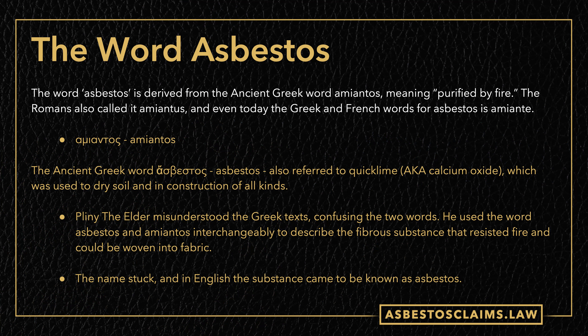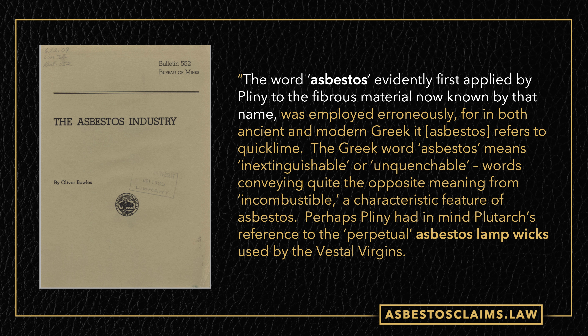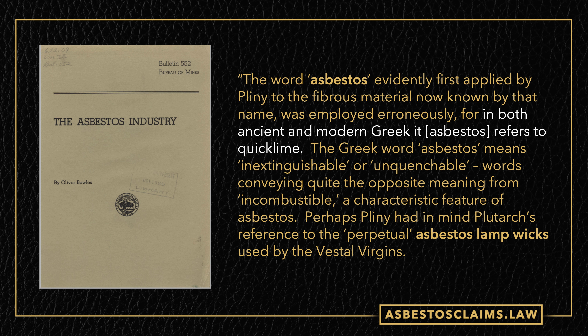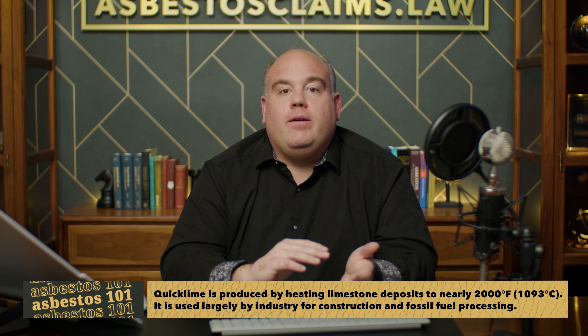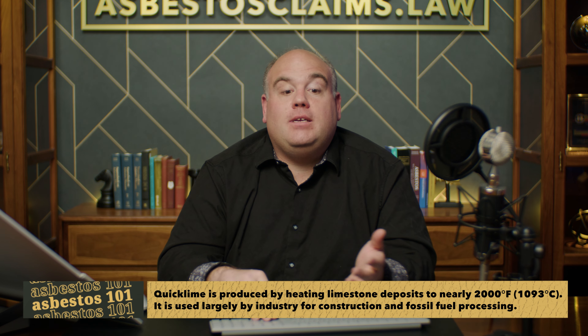The word asbestos is derived from an ancient Greek word called amiantos, which means purified by fire. The Romans had a similar name, and the Greek and French words for it today are also very similar. Oliver Bowles confirms that the word asbestos was evidently first applied by Pliny to the fibrous material, but he got it wrong. The Greek word asbestos actually means inextinguishable or unquenchable — the opposite of incombustible. Pliny the Elder misunderstood a Greek text, confusing quicklime with asbestos. The name stuck, and today the English word is asbestos.